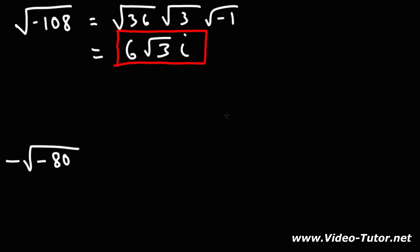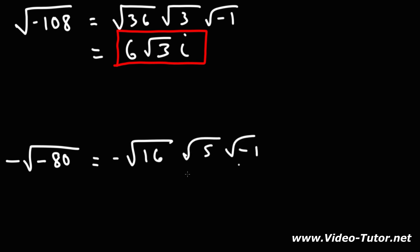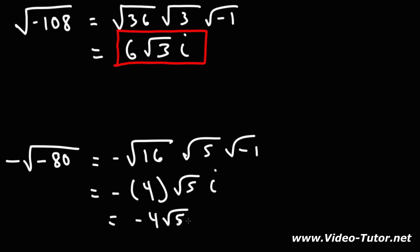For the next one, we need to find the highest perfect square that goes into 80, which is 16, since 16 times 5 is 80. So we have the square root of 16 times the square root of 5 times the square root of negative 1. The negative on the outside stays there. The square root of 16 is 4, the square root of negative 1 is i, so this gives us negative 4√5 times i.